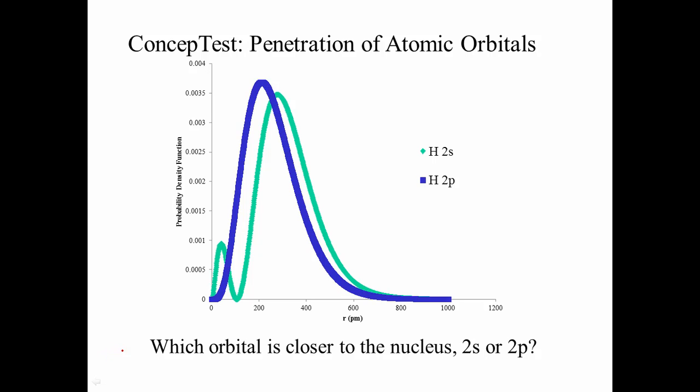You might have said 2s or 2p, and there's some reasons for both. Look here at the light green curve, which is the hydrogen 2s, we see that the maximum of the curve is further away, this is the radius from the nucleus, further away than the maximum of the 2p orbital. However, if we continue to follow this 2s curve, we see that there is a lobe of the curve of the orbital that is closer to the nucleus, higher density here, closer to the nucleus than the 2p. And so we would call this the penetration. So the 2s orbital actually penetrates closer to the nucleus than the 2p.